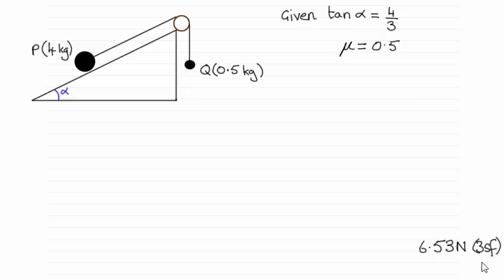So as usual I'm going to take you slowly through the method but you might want to fast forward. Okay so what we have here is what we're given essentially the two particles P and Q attached by this light inextensible string passing over a smooth pulley and the plane is inclined at an angle alpha and we're given that tan alpha equals four thirds and the coefficient of friction then is 0.5.